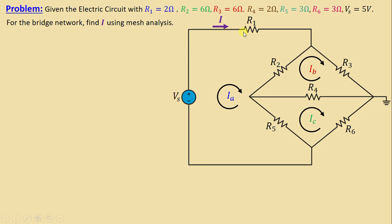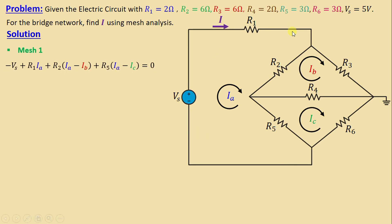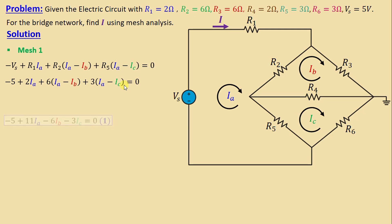Let's go to the solution. Starting with mesh 1, by applying KVL in mesh 1 we can write: negative Vs plus R1·Ia plus R2·(Ia minus Ib) plus R5·(Ia minus Ic) equals zero. Replacing the resistors and voltage with their numerical values: negative 5 plus 2·Ia plus 6·(Ia minus Ib) plus 3·(Ia minus Ic) equals zero. Simplifying, we obtain: negative 5 plus 11·Ia minus 6·Ib minus 3·Ic equals zero.